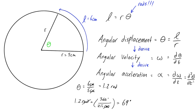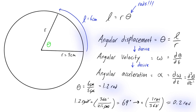While we're at it, let's convert to revolutions as well. We take 69 degrees and multiply by one revolution over 360 degrees, so 69 divided by 360 gives us about 0.2 revolutions. So whether we say 1.2 radians, 69 degrees, or 0.2 revolutions, those are all three different ways to express the angular displacement of this disc.